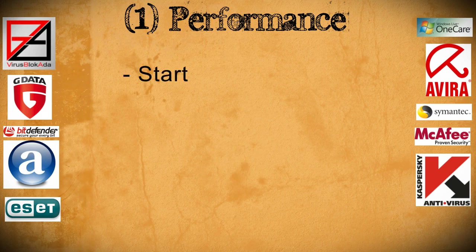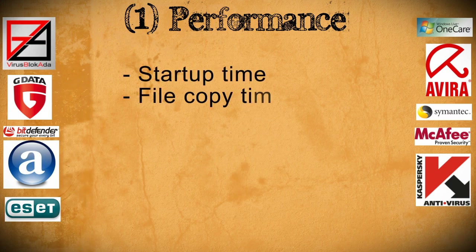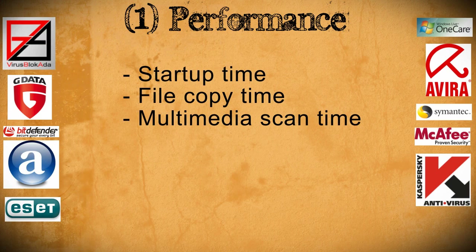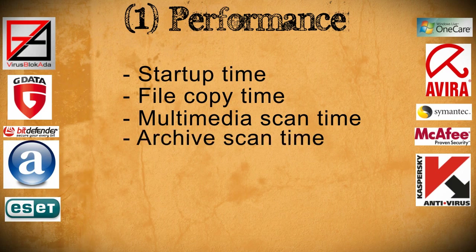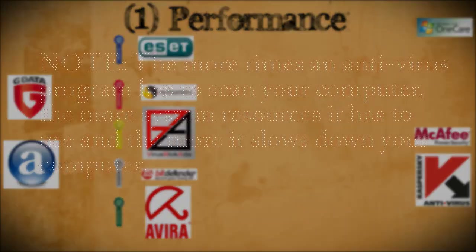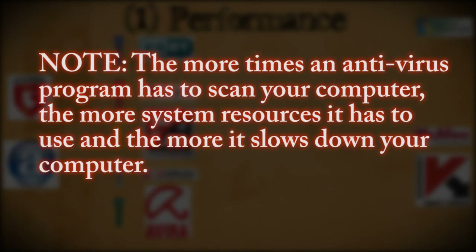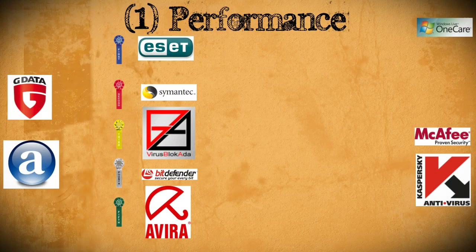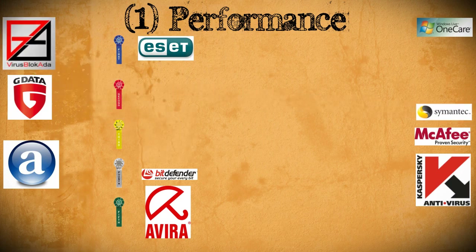The performance of an antivirus program is based on four things: time it takes to boot up, file copying, scanning multimedia content, and scanning zip files. Here are the top five based on those averages set at their default settings. One thing that this test didn't take into account is how often a program scans for viruses, because the more unnecessary scans a program does, the more it slows down your computer. If this was taken into account, programs like Symantec and VBA32 would be dropped a little bit lower than where they're at now.